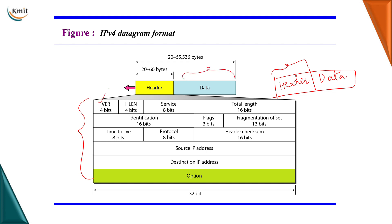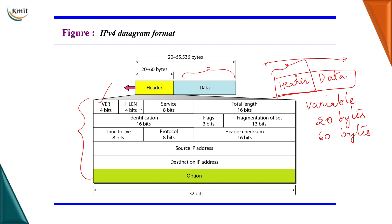The version field tells you that the IP protocol is version 4. In case of IPv6, the version value will be 6. Then comes the header length (H-length). The header length is variable — it could be either 20 bytes or 60 bytes. If the value of this field is 5, then 4 × 5 gives 20 bytes. If the value is 15, then 4 × 15 gives 60 bytes.